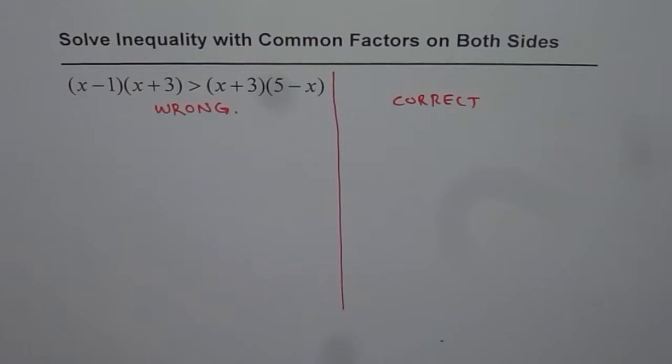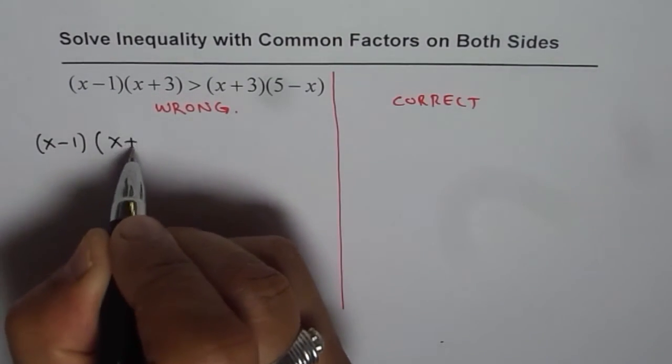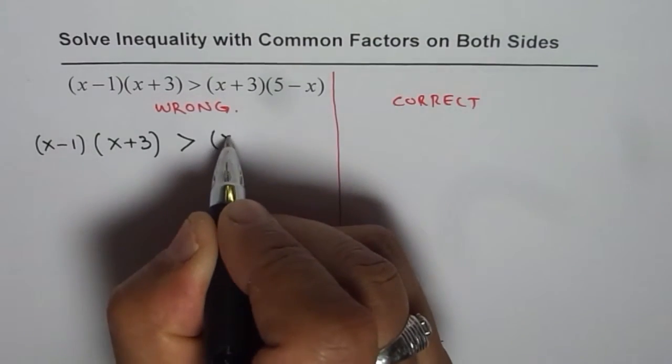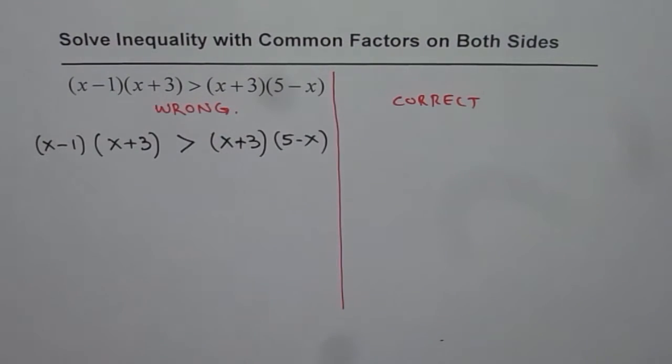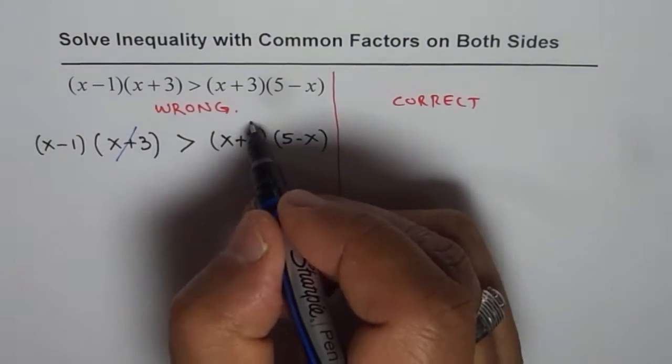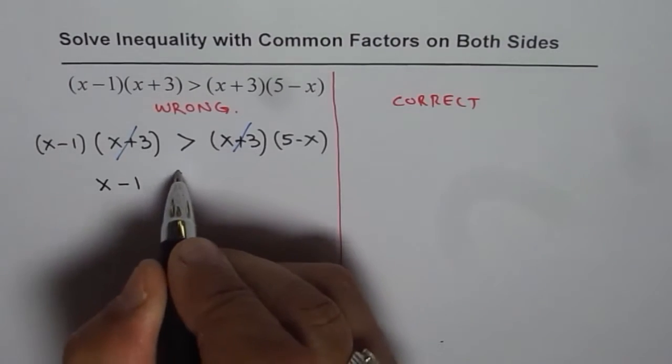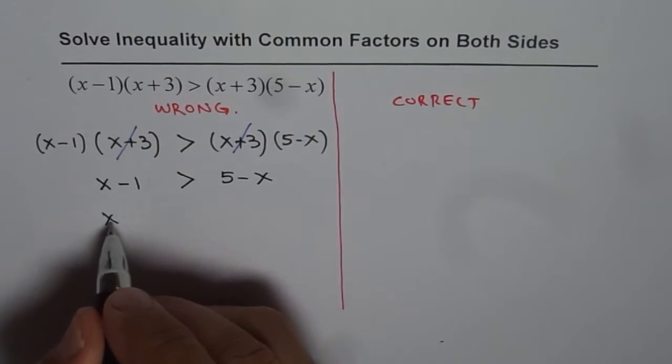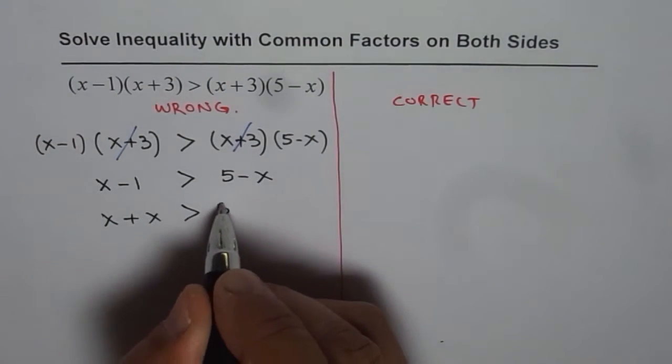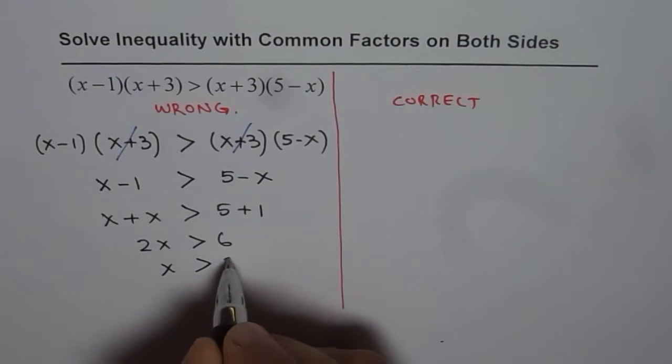First, let me show you the wrong way of doing things. So let me copy this question: (x-1)(x+3) > (x+3)(5-x). I have seen many times that in a hurry, someone may cancel these common factors out. Once they cancel this out, you get x-1 > 5-x. You can bring x together, so you get x+x > 5+1, which gives 2x > 6 or x > 3 as your solution.